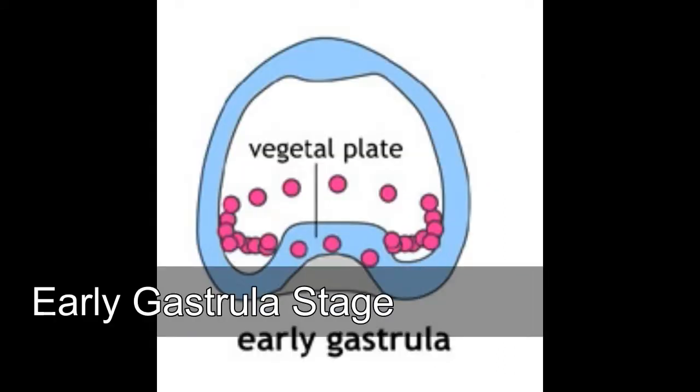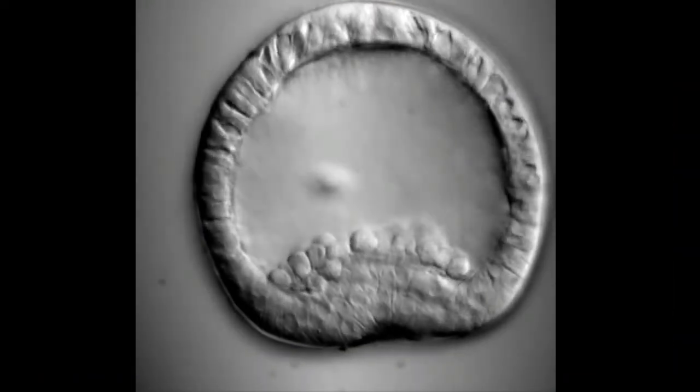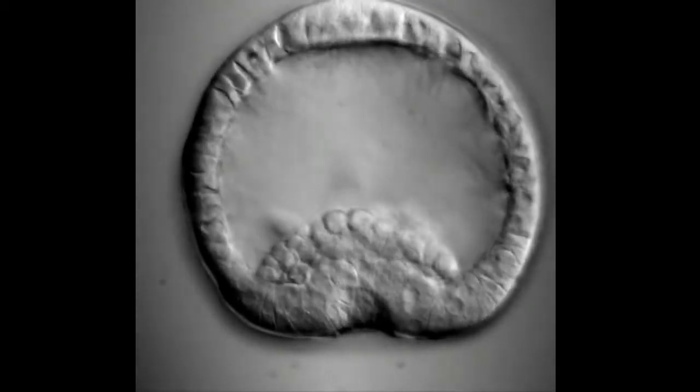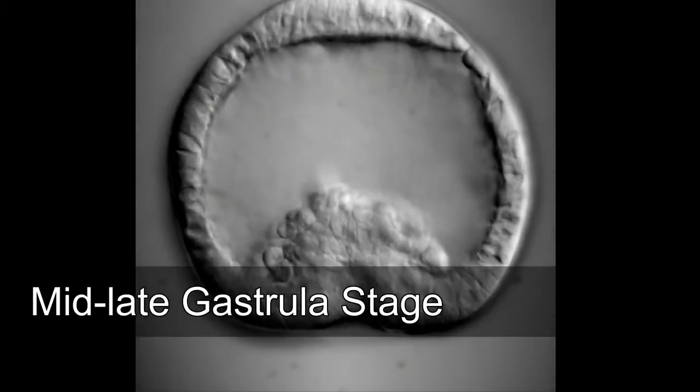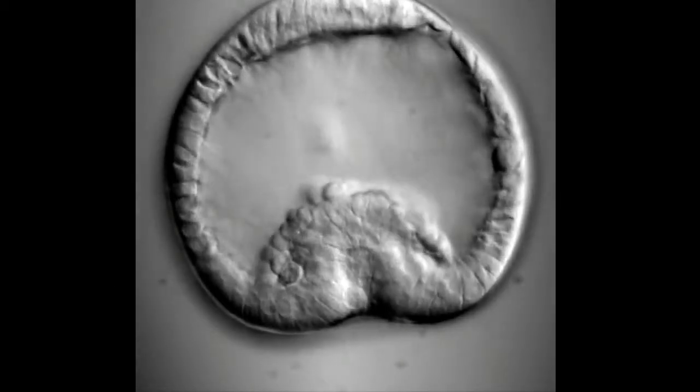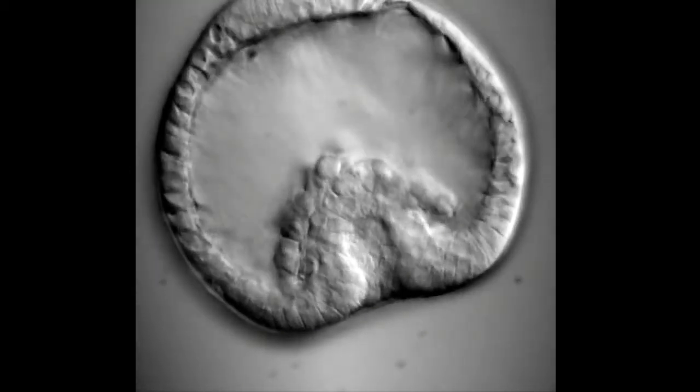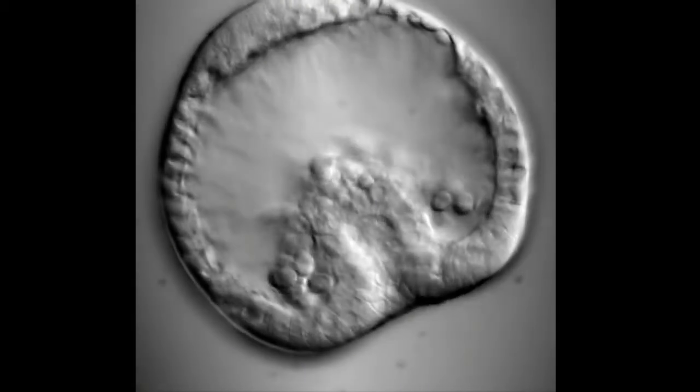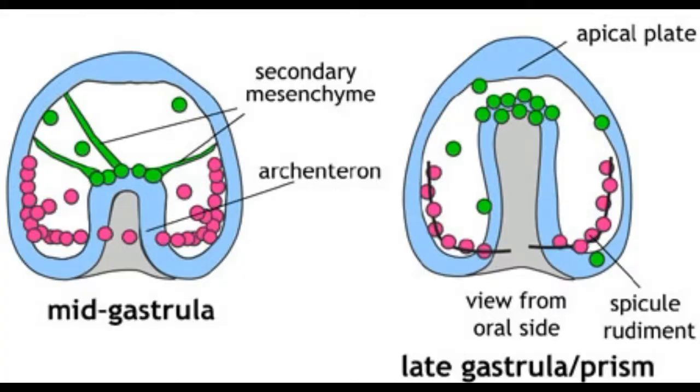Early gastrula stage: primary invagination completed. A stub-like gut rudiment forms. Secondary mesenchyme cells appear at the tip of the gut rudiment. Middle to late gastrula stage: the gut rudiment is stretched along the animal-vegetal axis by contraction of the SMC filopodia. Late gastrula stage: the archenteron cells are rearranged and a slender archenteron forms.